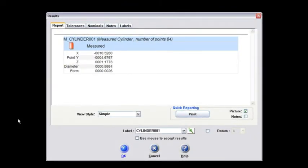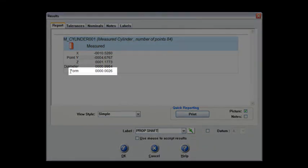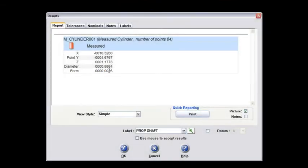Notice in the FCE file I've got all my results up here. The first thing I'm going to do is I'm going to go to the cylinder label and change that name to prop shaft. Then I go back and I look at the form.